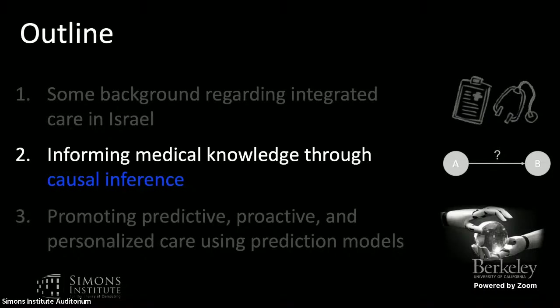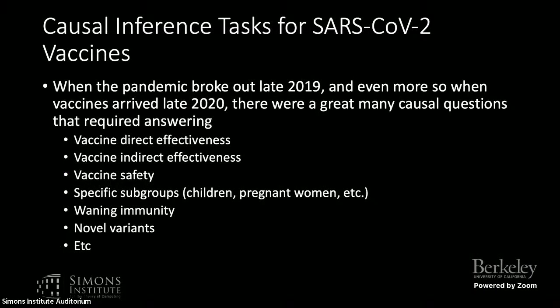Let's start with the scientific part — how we used this data to inform medical knowledge through causal insight. When the COVID-19 pandemic broke out, and even more so once vaccines started in late 2020, there were a lot of causal questions that needed very quick answers. Everyone — the medical community, the scientific community — needed to know about vaccine effectiveness, both direct and indirect, vaccine safety, effects for children, pregnant women, and other subgroups, waning immunity, and novel variants.